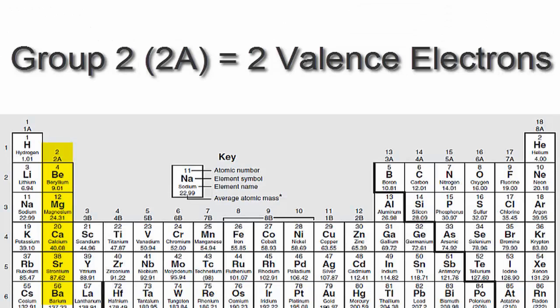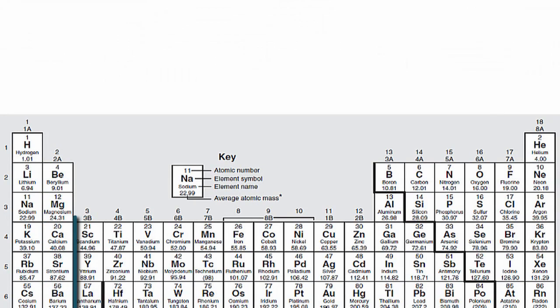If you look at group 2 or 2A, you'll see that those elements have two valence electrons. We'll skip over the transition metals since they're a bit more complicated and probably don't apply to you.